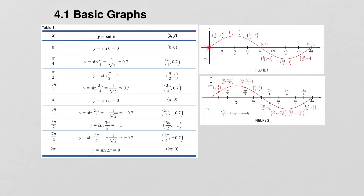For example, when x is 0, sine is also 0. When x is pi over 4, sine is approximately 0.7. At pi over 2, sine is 1. At 3 pi over 4, sine is again 0.7. The graph goes up, comes down, goes all the way down to negative 1 when x is 3 pi over 2, and then goes back up to 0 again because the sine of 2 pi is 0.